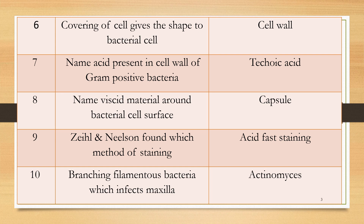Question 10: Name the branching filamentous bacteria which infects the maxilla. A very common bacteria that infects the maxilla and produces actinomycosis. Answer: The name of the bacteria is Actinomyces. This is a frequently asked question and frequently encountered clinical case.